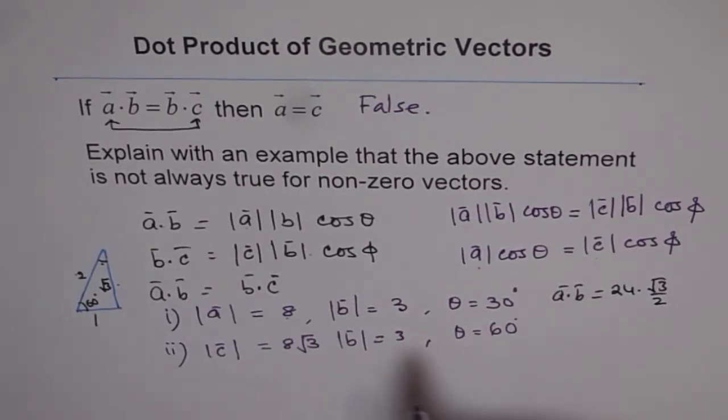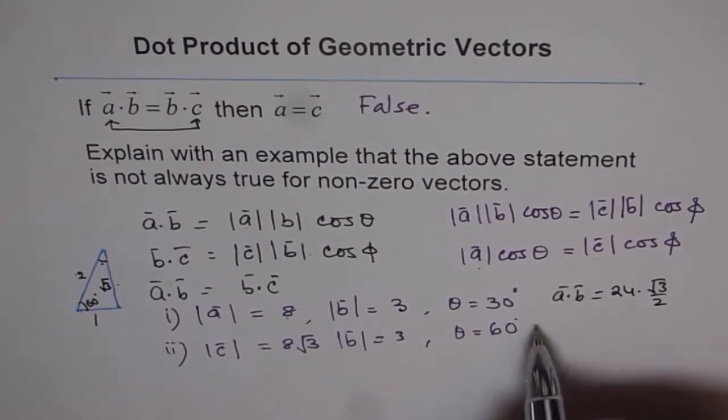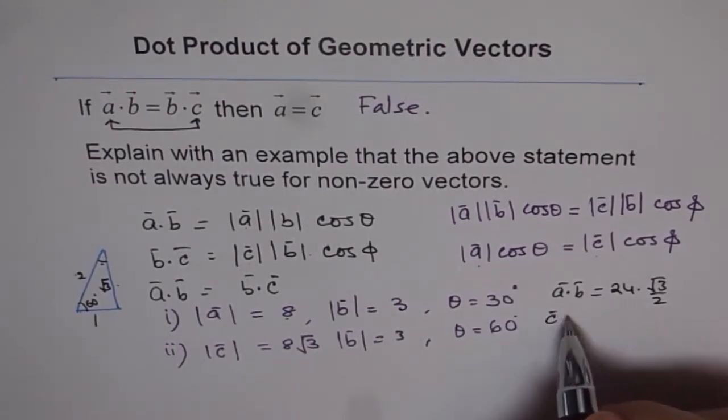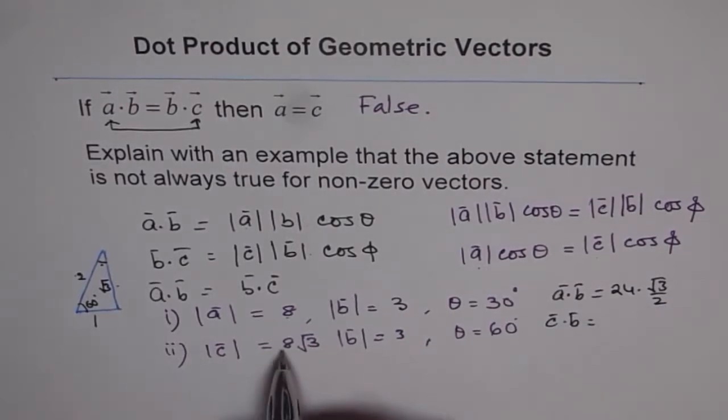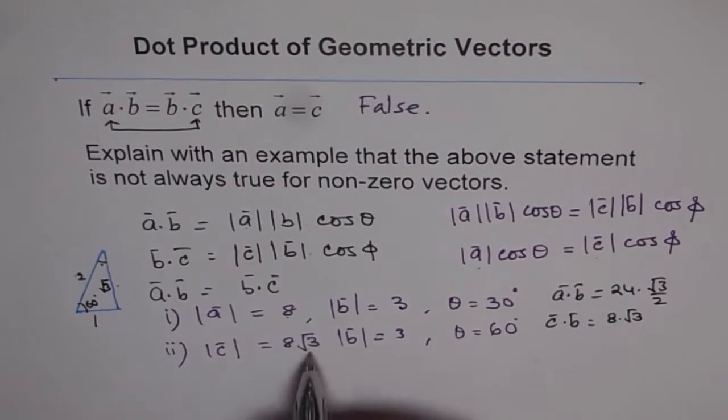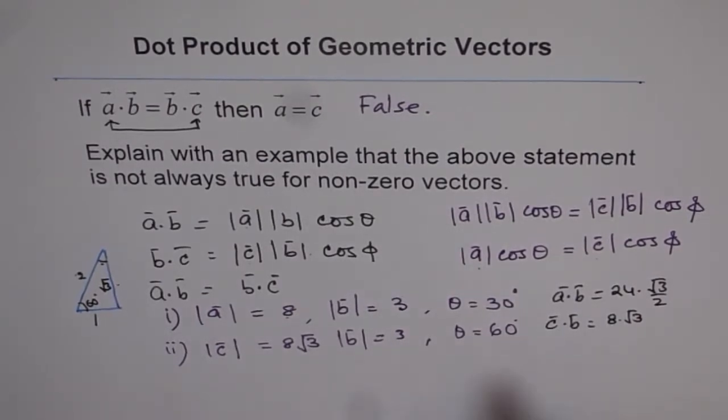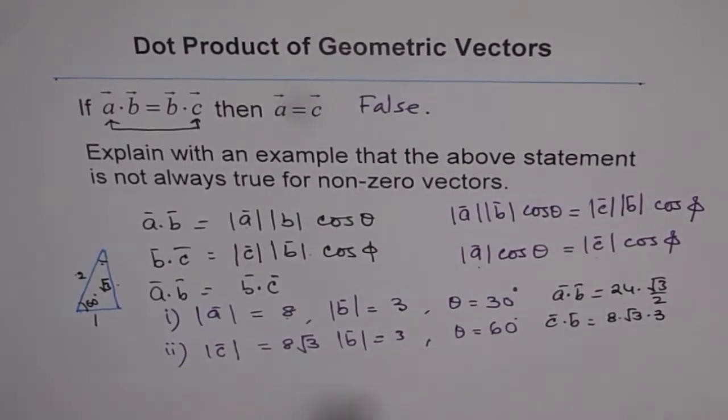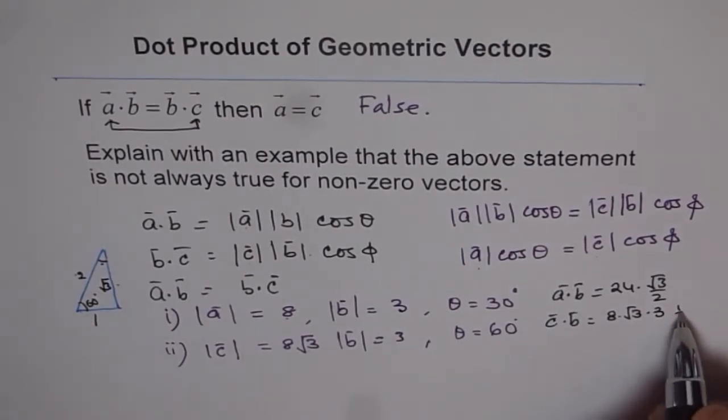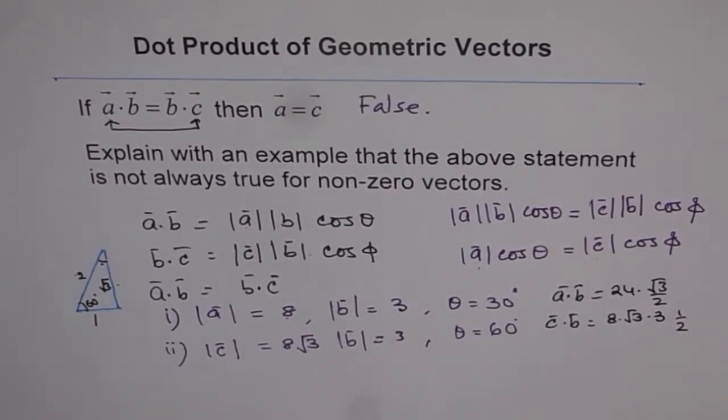Now here, we have A dot B. Instead of A dot B, now we have C dot B. So C dot B will give us 8 square root 3, that is C, and B is 3 times 3. And then what is cos of 60? Half, 1 over 2.